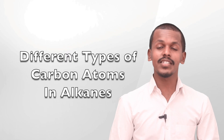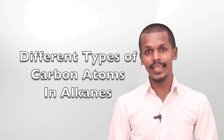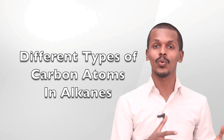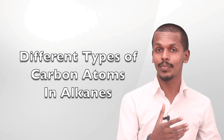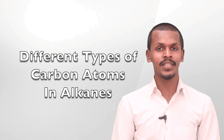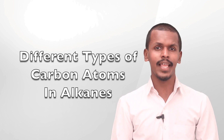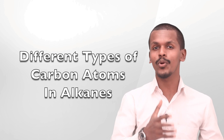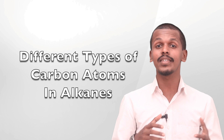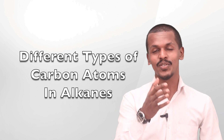Hey friends, in the last lesson we studied about the classification of alkanes, in which we got to know there are straight chain carbon atoms and branch chain carbon atoms. Now we are going to study about the different types of carbon atoms that we could see in alkanes.